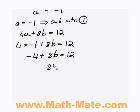It becomes negative 4 plus 8b equals 12. And then I have 8b equals, if I put the negative 4 on the other side and make it a positive, I get 8b equals 16. So b equals 2. So I've found my second variable.